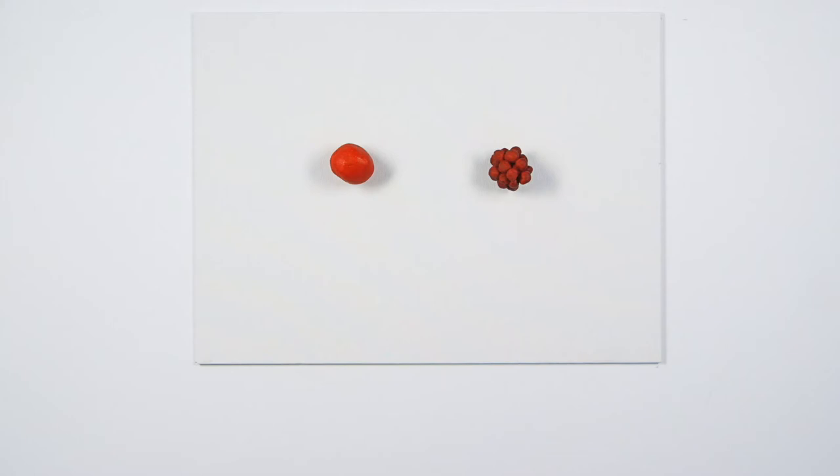These oversized models show pigment particle size and show one reason why oil absorption rates can vary. Within a volume of colour, the number of particles may vary according to their size.